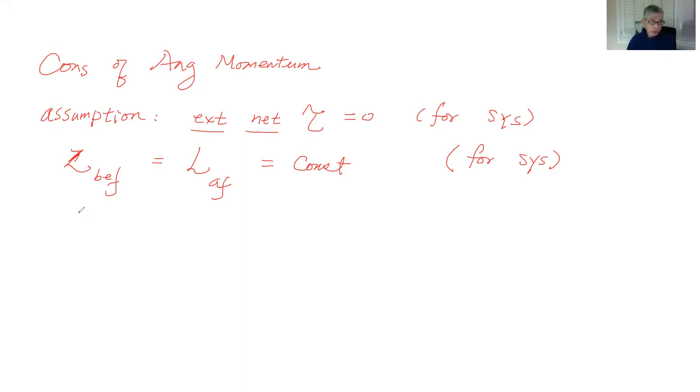For example, if your system originally has two items: I1 omega 1 plus I2 omega 2. And later, you can assume that this is true. Then later you have - maybe I1 changes.